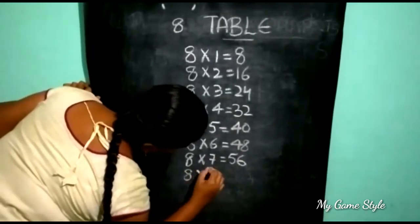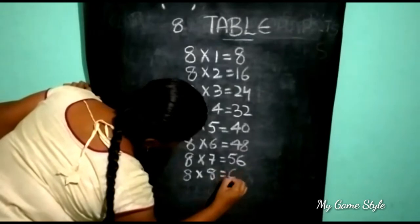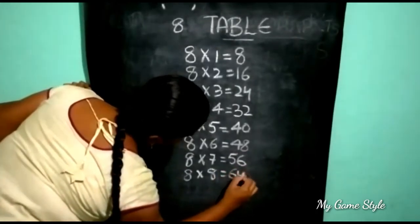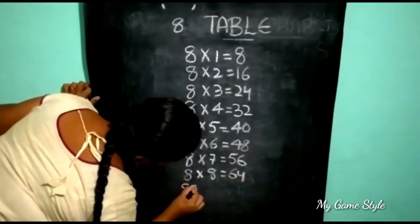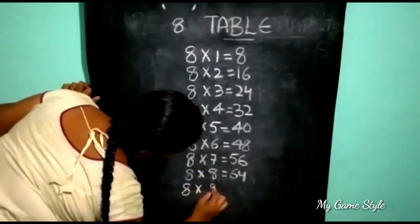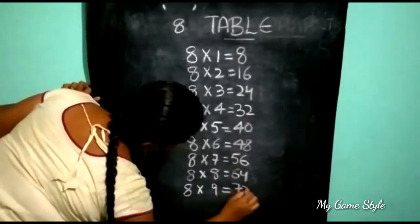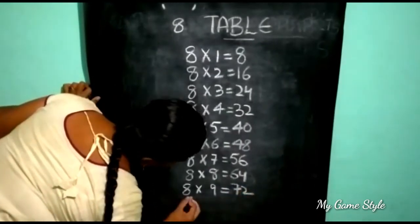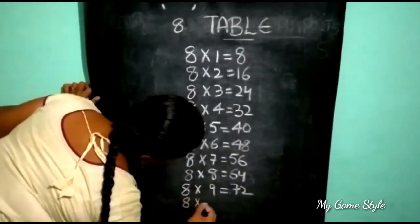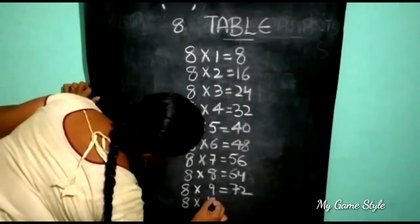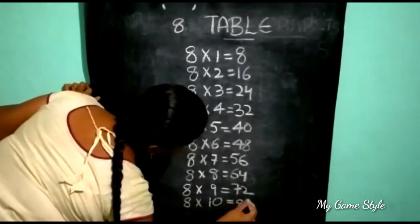Eight sixes are forty-eight. Eight sevens are fifty-six. Eight eights are sixty-four. Eight nines are seventy-two. Eight tens are eighty.